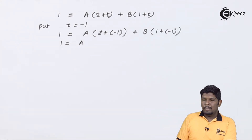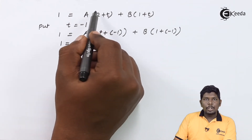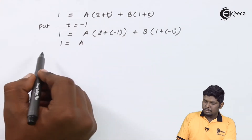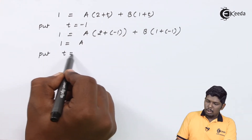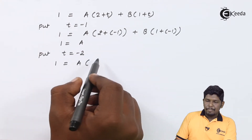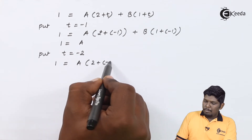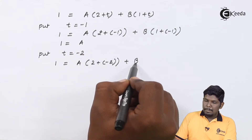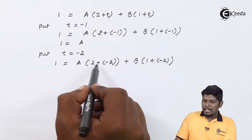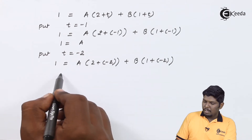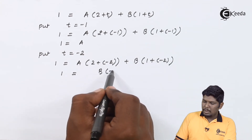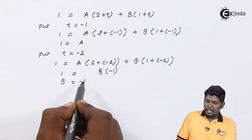Similarly, to find the value of B, the (2 + t) bracket needs to be zero, so we put t = -2. This gives 1 = A(2 + (-2)) + B(1 + (-2)). Since 2 - 2 = 0, the A term vanishes. We have 1 = B(1 - 2) = B(-1), therefore B = -1.